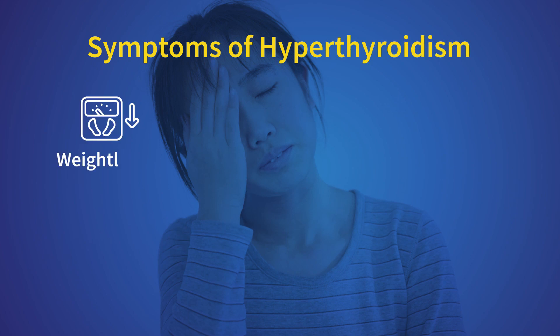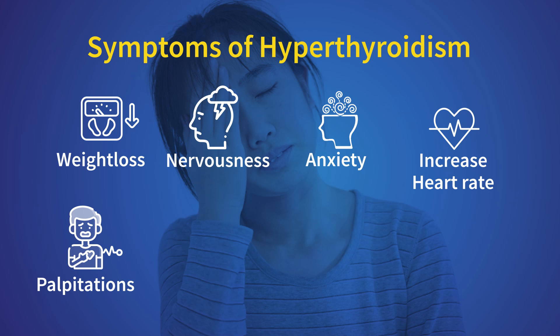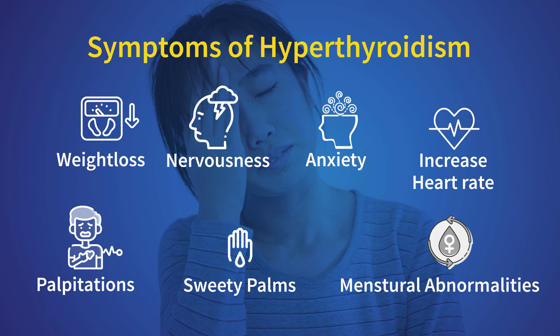Hyperthyroidism is because of increased production of thyroid hormones, so the body's metabolic rate is also increased and the symptoms are slightly different. You will have weight loss despite increased appetite, increased nervousness and anxiety, increased heart rate which we call tachycardia, palpitations, irregular heart rate, moist and sweaty palms, increased sweating even when sitting under a fan, and some forms of menstrual abnormalities.